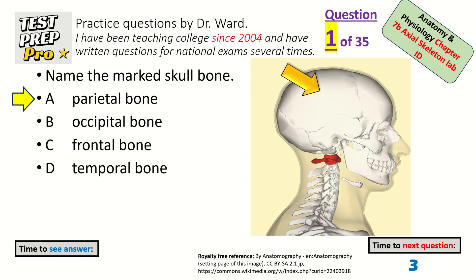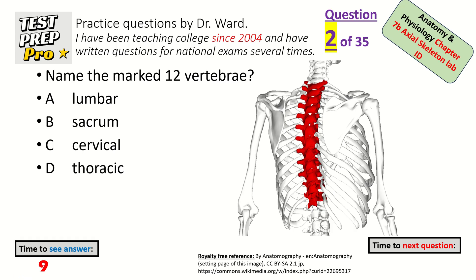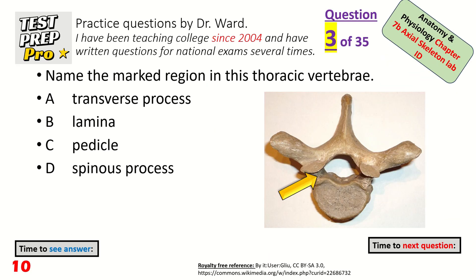Name the marked 12 vertebra — these connect in with the ribs. Thoracic vertebra. Name the marked region in this thoracic vertebra — it's just behind the vertebral body on each side, a very small slender spot. Pedicle.